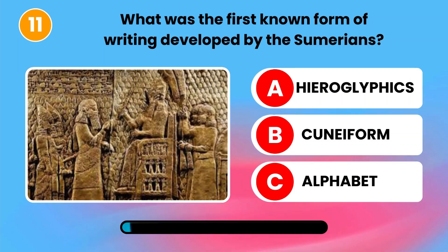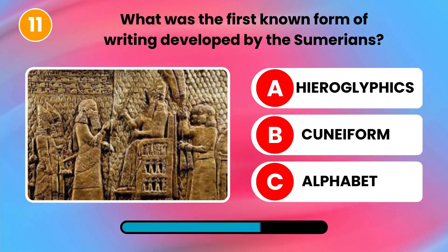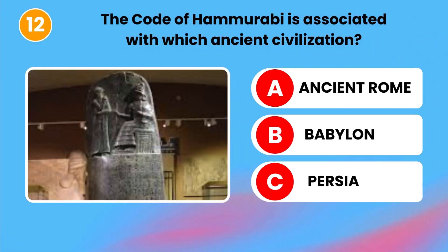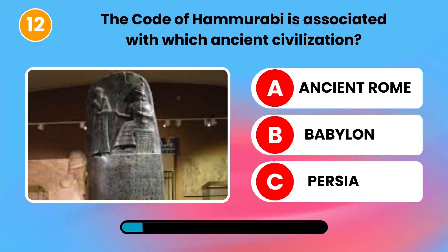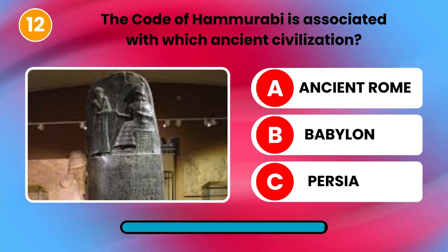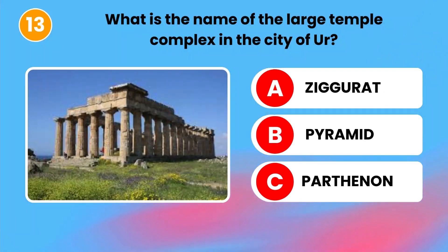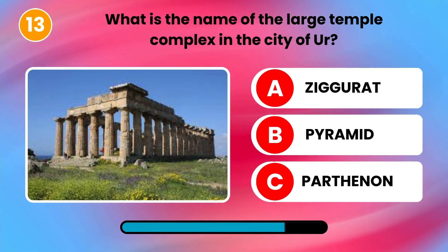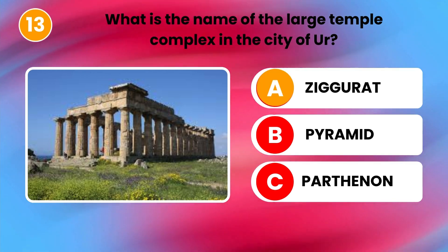History. What was the first known form of writing developed by the Sumerians? Cuneiform. The Code of Hammurabi is associated with which ancient civilization? Babylon. What is the name of the large temple complex in the city of Ur? Ziggurat.